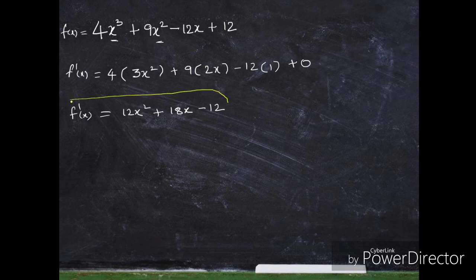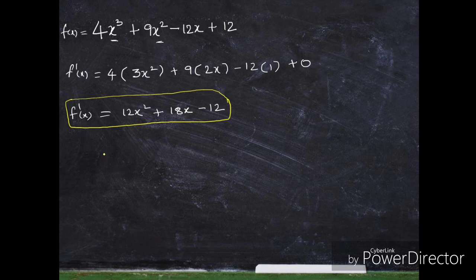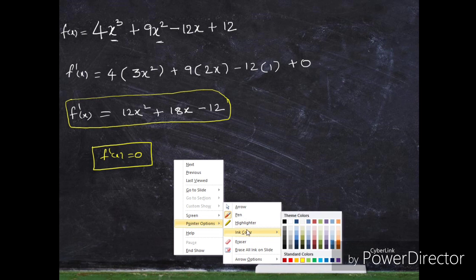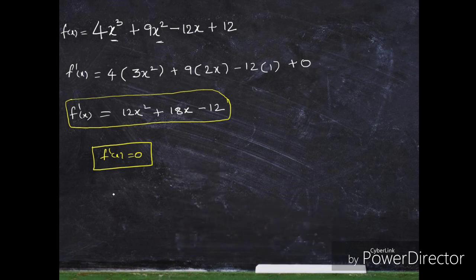So f dash of x is highlighted. Now we set f dash of x equal to 0. Therefore 12x squared plus 18x minus 12 is equal to 0.